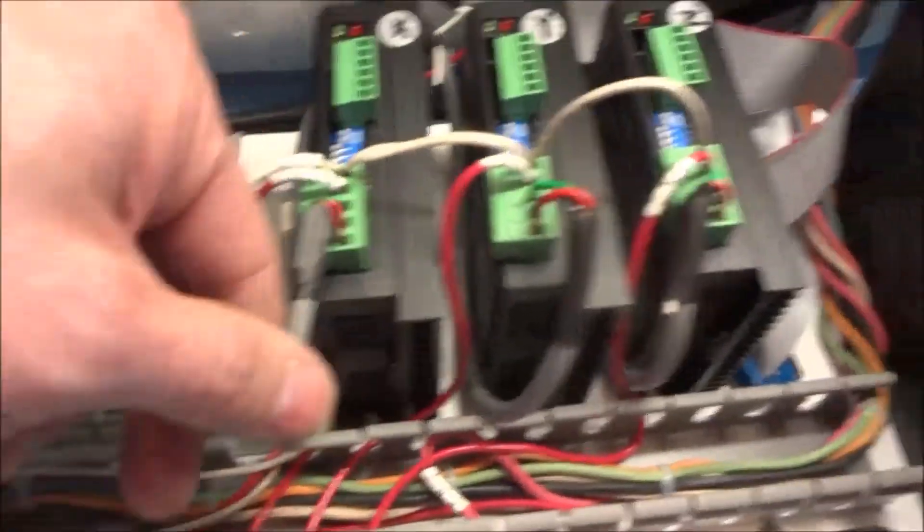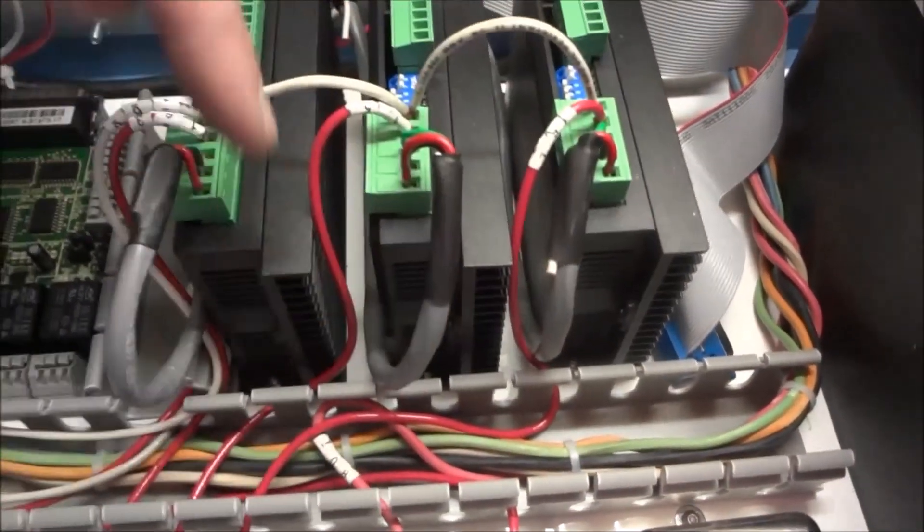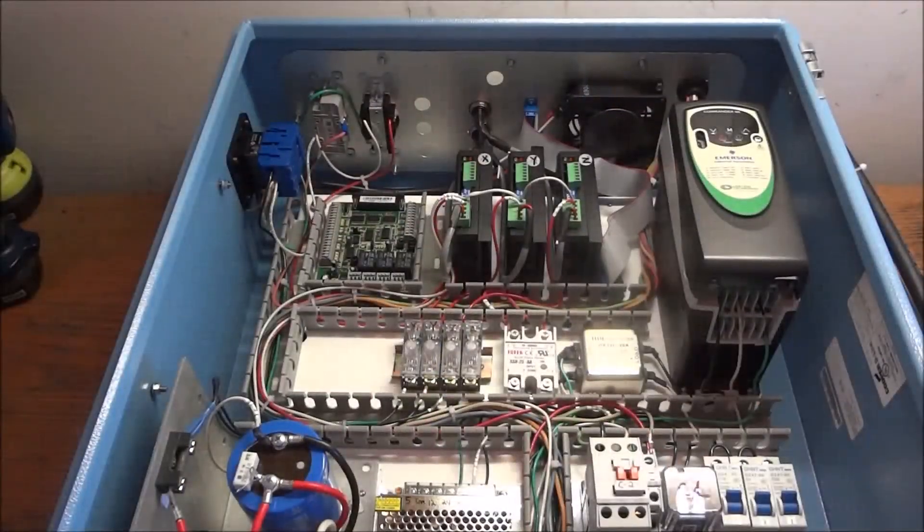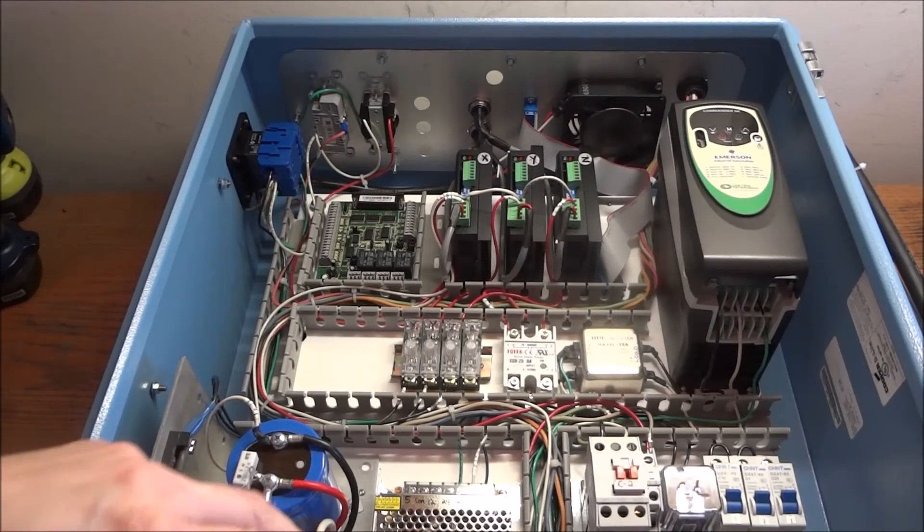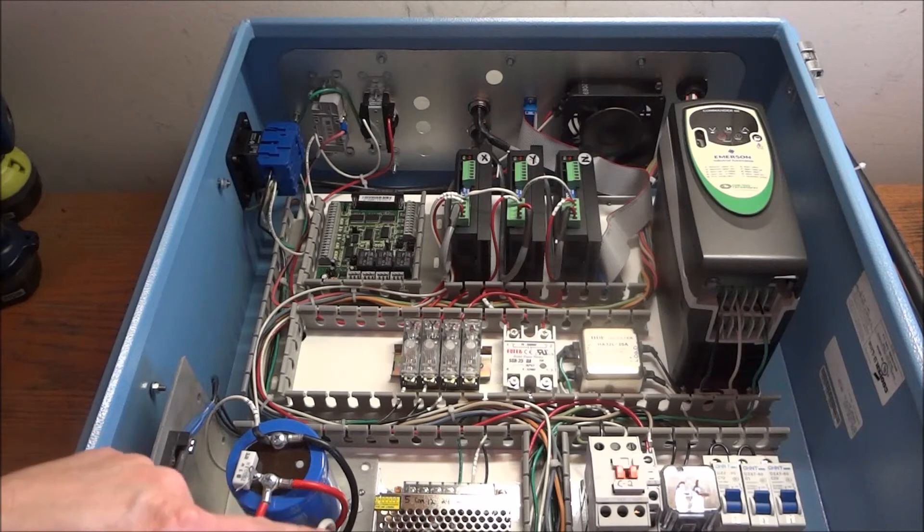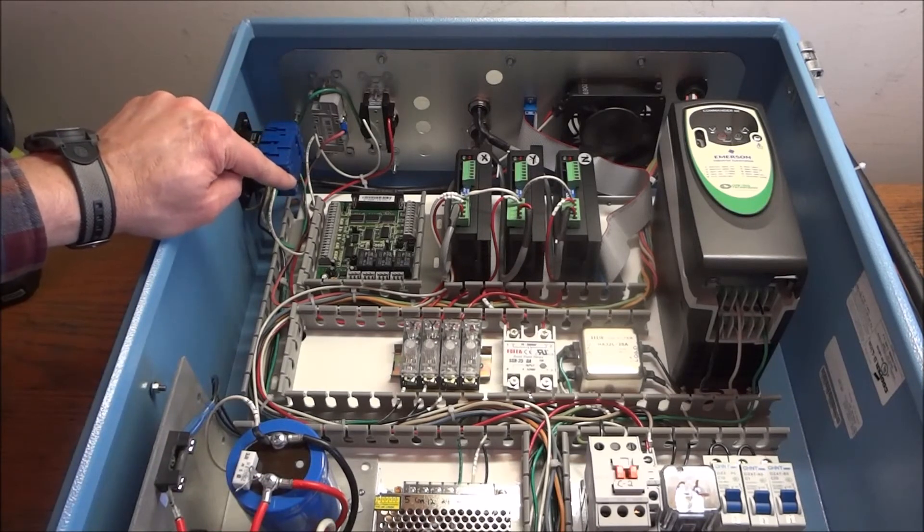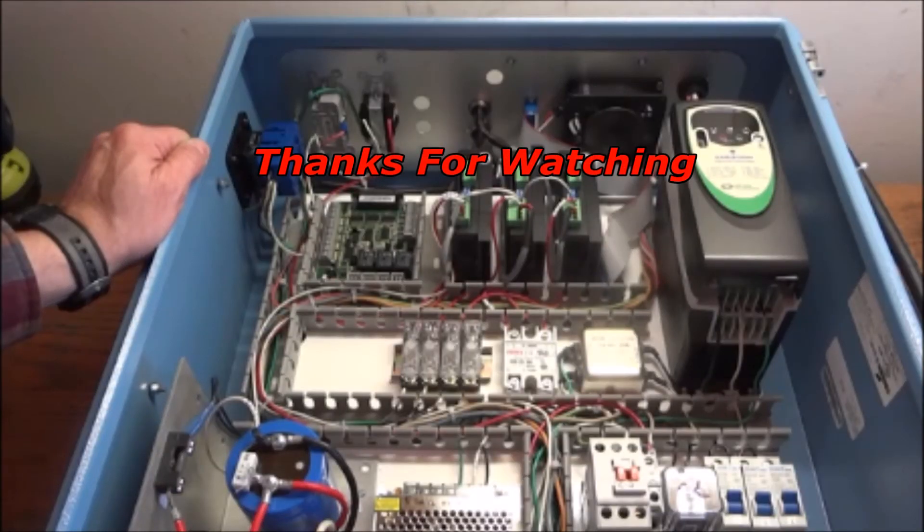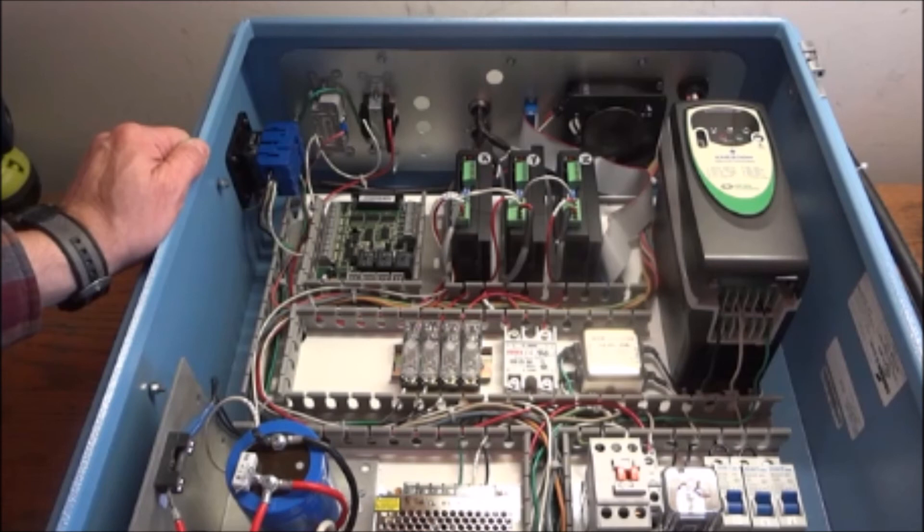You can see it makes for a nice neat and tidy installation, just run them in between and out to there. So that wraps up this video. In our next video we're going to start running our 5 volts and 12 volts up to our C11 GS board, so stay tuned for that. So thanks for watching the video. Please feel free to comment if you have any questions, thumbs up if you like the video, please subscribe, and most importantly, be safe.